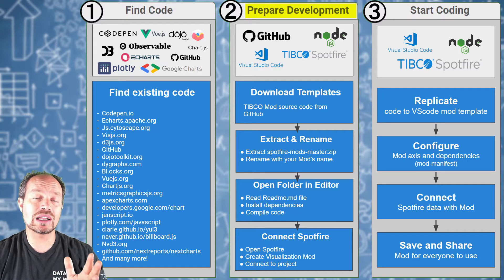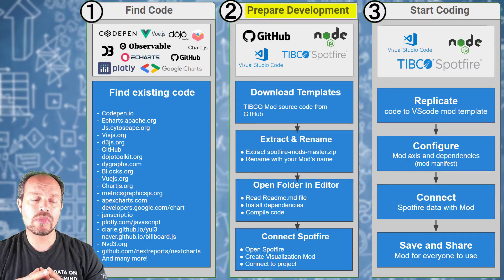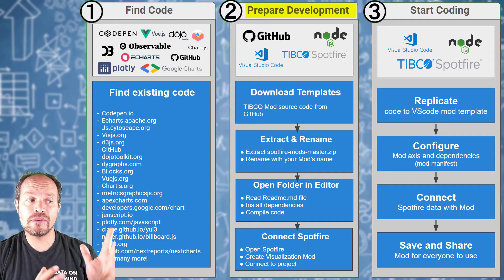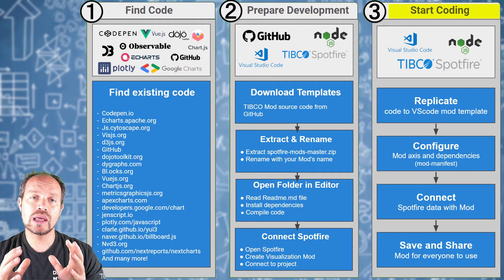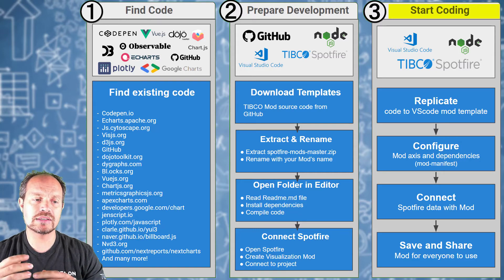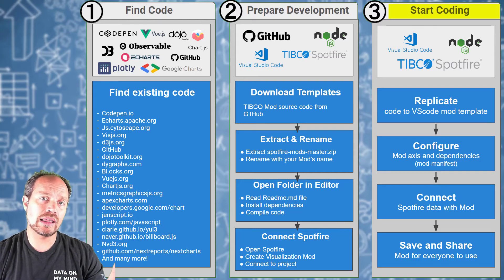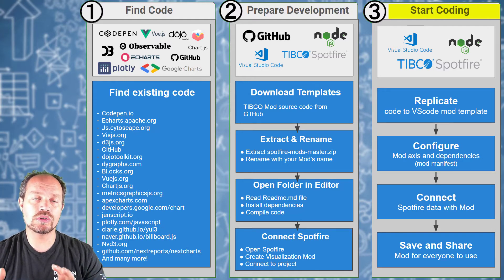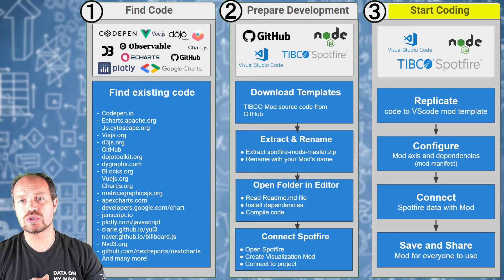Once you have that connection ready, you can start coding, which is the third step. We are going to replicate the code that we found exactly the same and see if the Spotfire environment accepts it and it works as expected. Then we're going to start configuring the access by switching the manifest and connecting the data — replacing the hardcoded data from the first step with real underlying data. And then we're going to save and share our work for anyone in the organization to use.